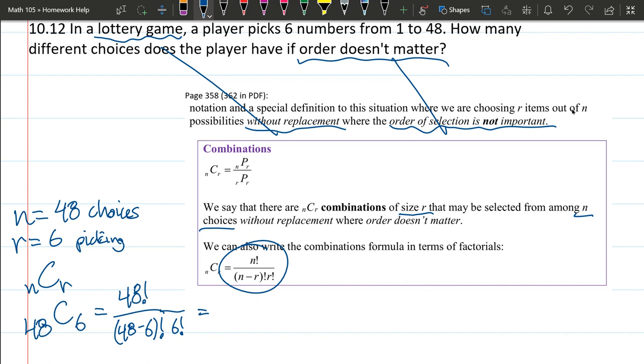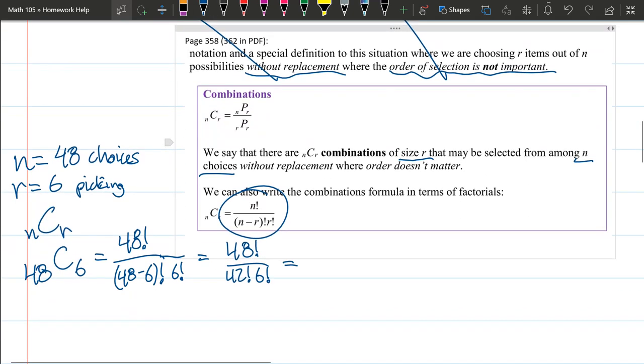We can definitely do the subtraction. So you have 48 factorial divided by 42 factorial times 6 factorial. You can go ahead in a calculator and type this in, but I'm going to do a little bit of cancellation because we can do that pretty easily.